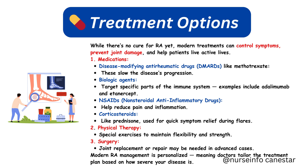Biologic agents target specific parts of the immune system — examples include adalimumab and etanercept. NSAIDs (nonsteroidal anti-inflammatory drugs) help reduce pain and inflammation. Corticosteroids like prednisone are used for quick symptom relief during flares.